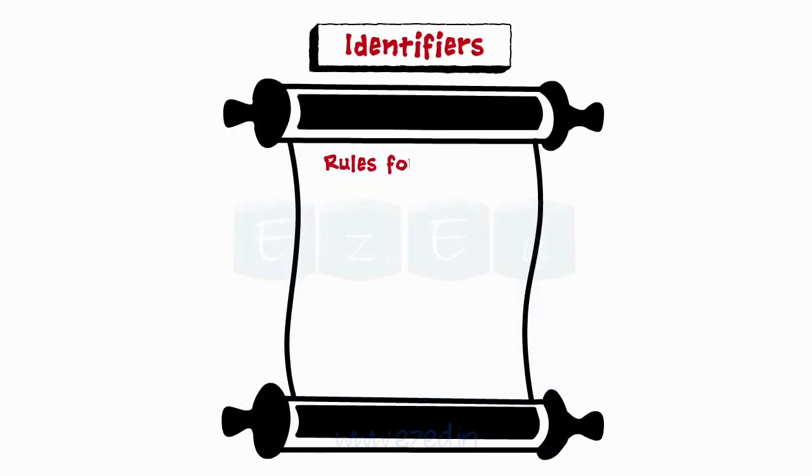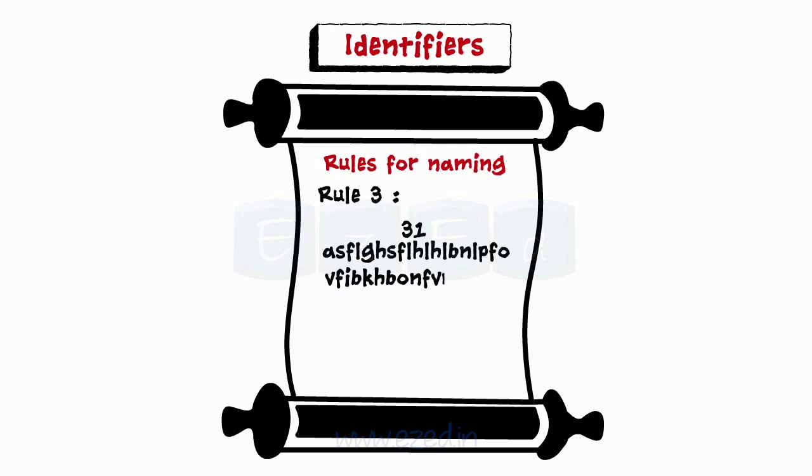There are certain rules which should be followed while naming identifiers. First character should be an alphabet or underscore. It must have only digits or alphabets or underscore. First 31 characters are only significant. A keyword cannot be used to name an identifier. No white spaces are allowed.